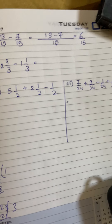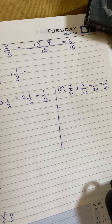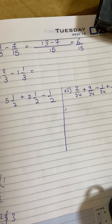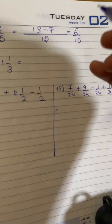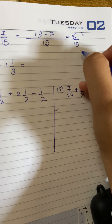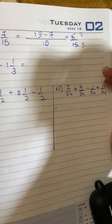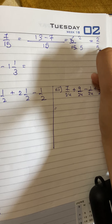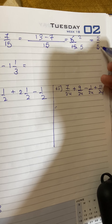Now in 6 by 15, both are divisible by 3 — 3 is the common factor. So divide both by 3: numerator becomes 2 and denominator becomes 5. Therefore the answer is 2 by 5, which is now in simplest form.